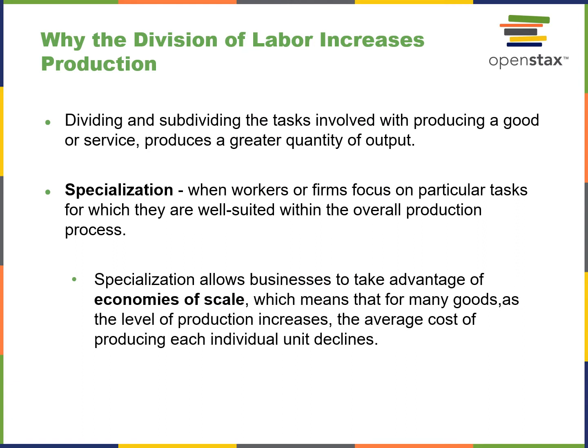Why does the division of labor increase production? Dividing and subdividing tasks in producing a good or service can produce a greater quantity of output. Specialization means each worker works in the area where they are best suited. This allows businesses the advantage of economies of scale — producing more goods as production increases, while the average cost of each individual unit declines.